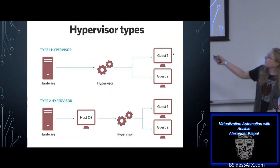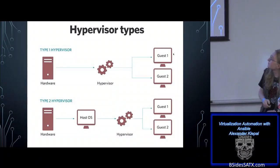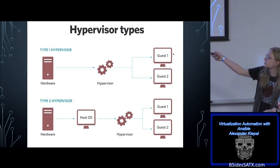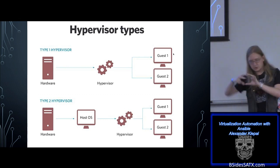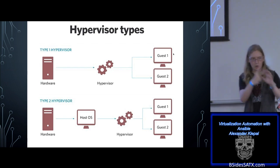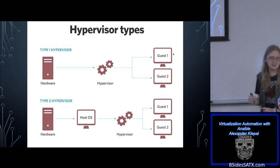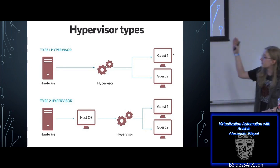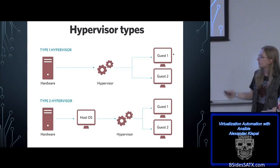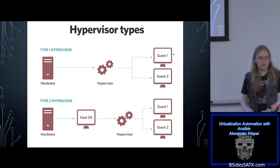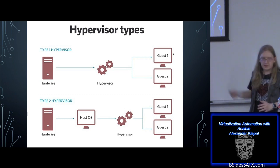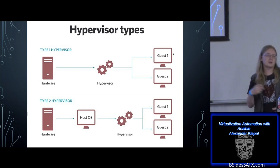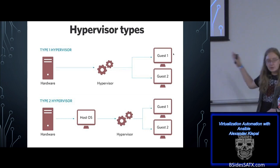The easiest distinction is type one and type two — running on bare metal versus on a regular machine. I have a graphic that covers the two types. A type one hypervisor runs the actual operating system that virtualizes your guest operating systems on bare metal. A type two hypervisor sits on top of a host OS — like Windows, Mac, or Linux — and then you run hypervisor software like VirtualBox or VMware Workstation on top of that, and run your guests.